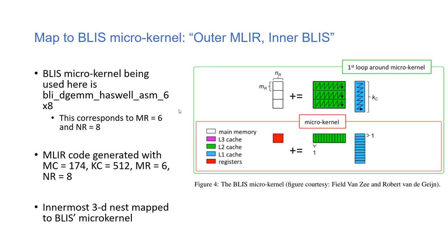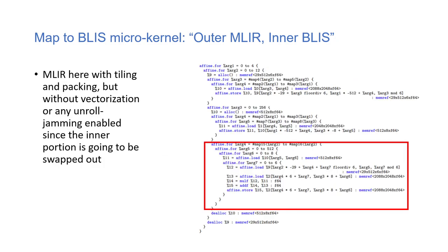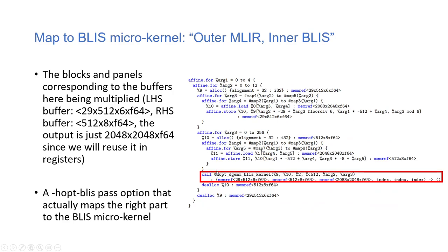You can pause for more details on the relevant slide, or refer to the paper. The key point is that this BLIS microkernel will be used within MLIR outer loops. Vectorization and unrolling are disabled so the inner kernel can be swapped for the BLIS kernel. You can see that the inner loops are replaced by the BLIS kernel, and the tensor dimensions need to match the BLIS kernel's dimension sizes.